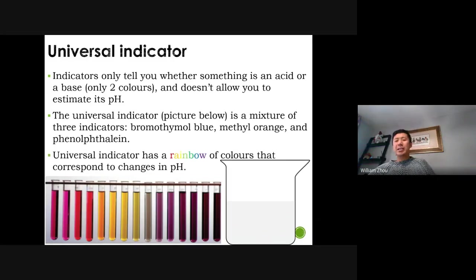If you notice, each of these indicators, they only have two colors: red or yellow, yellow or blue, red or blue, colorless or pink, blue or yellow. What if you mix some of these together? Because if you only have two colors, you can only tell whether it's an acid or a base. It doesn't tell you what's the pH. So the universal indicator gives you a rainbow. And where on the rainbow do you have that tells you the pH. If you mix three of those indicators together, you dip it into a gradient of acids starting from pH 0 to pH 14, you will get that nice and pretty. You can just look at the color and estimate.